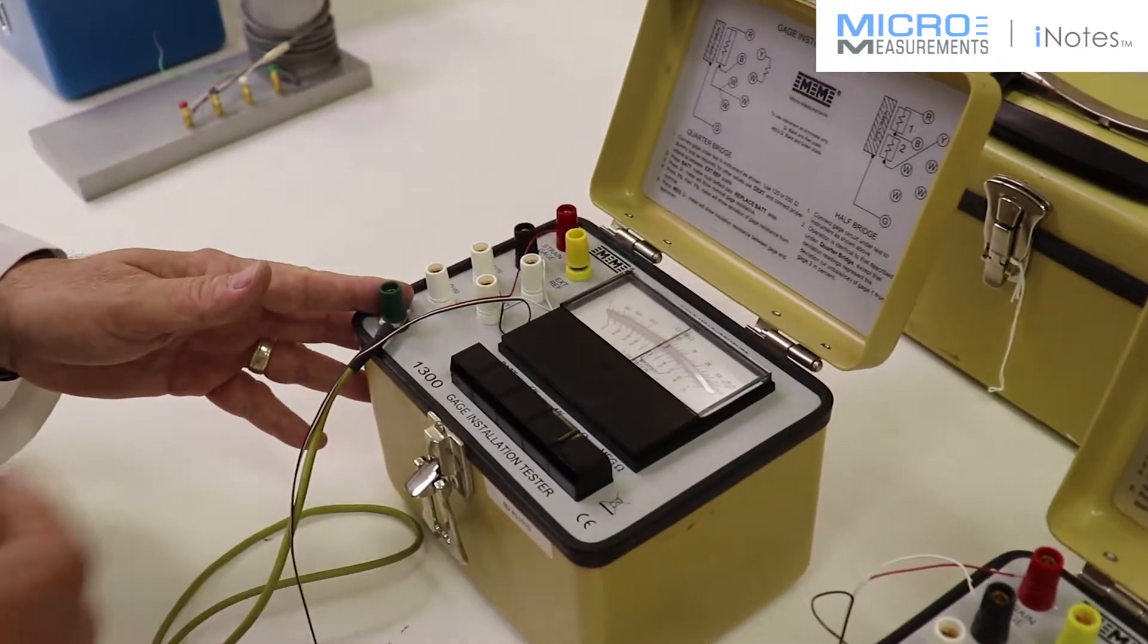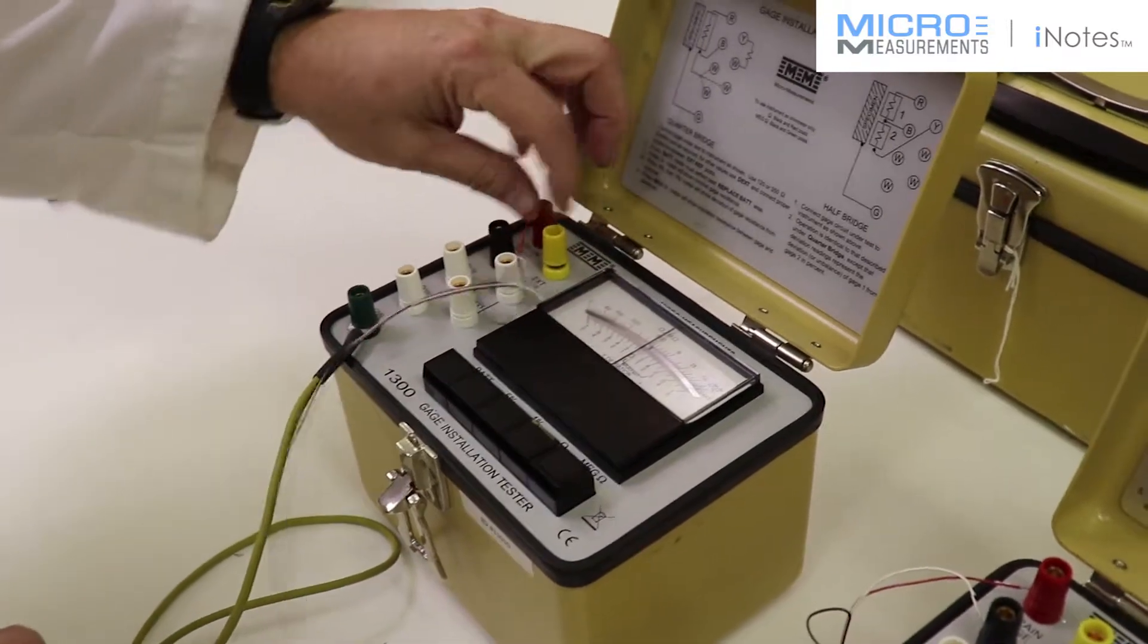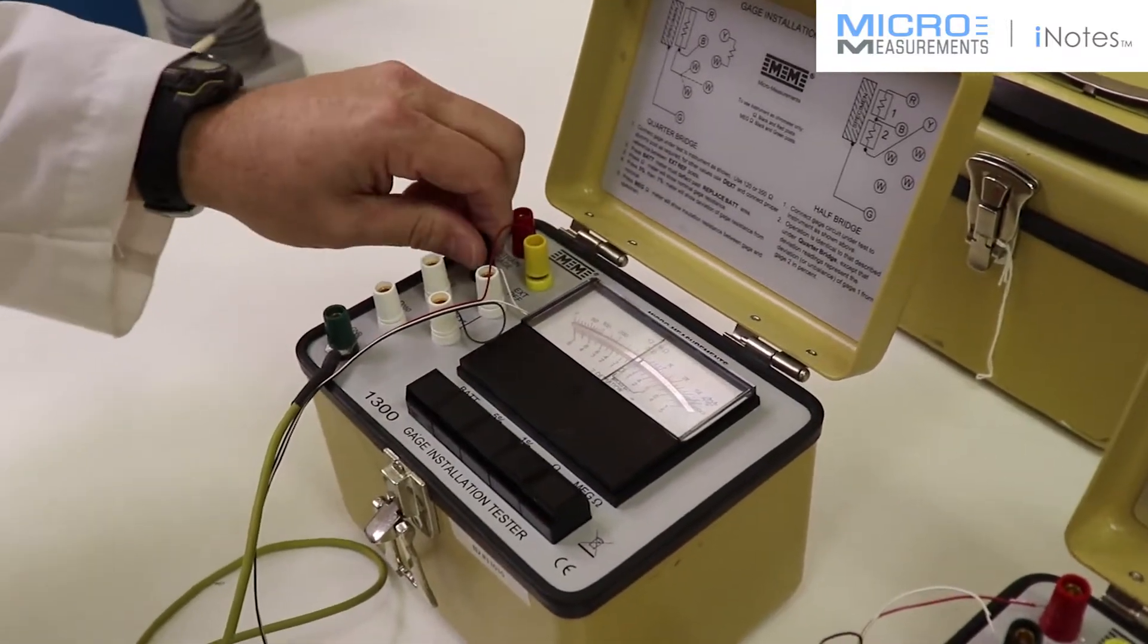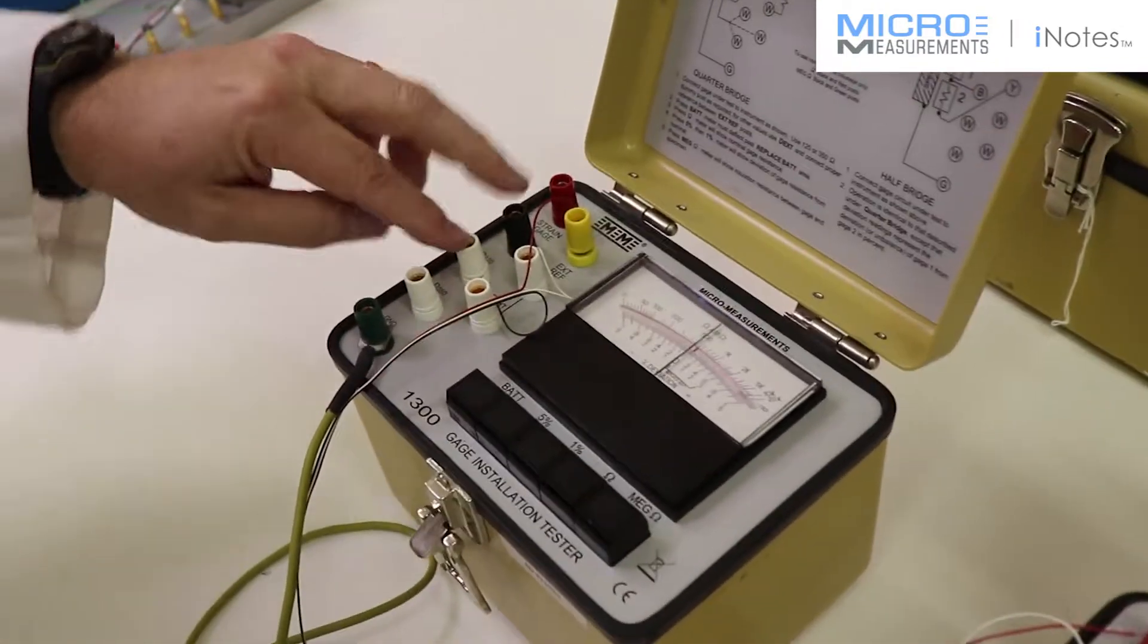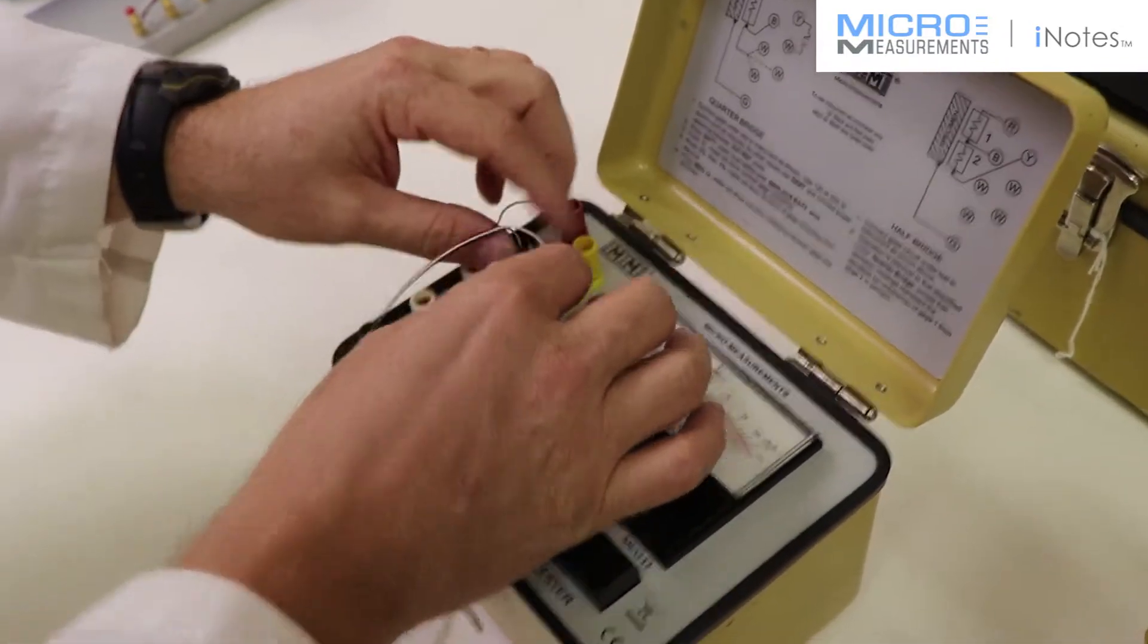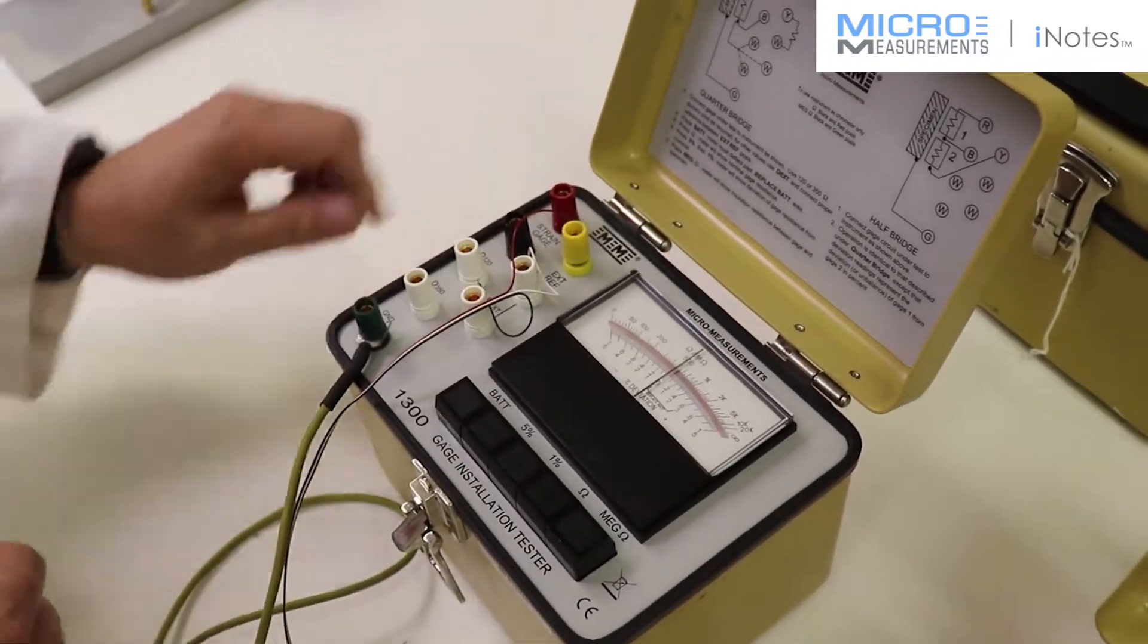This one is testing the traditional CEA series gauge, which is a 120 ohm. So I've got the red wire connected to the red post. The white wire in this case goes to the black post and the black wire goes to the white post. It really doesn't matter with these two, the white and the black, because they're common together on the strain gauge. That's just the way I wired it up.